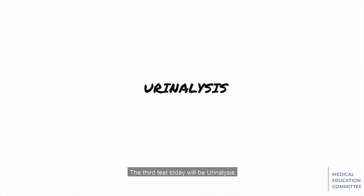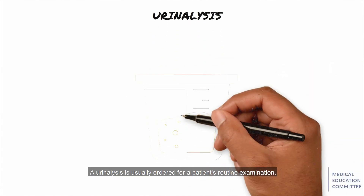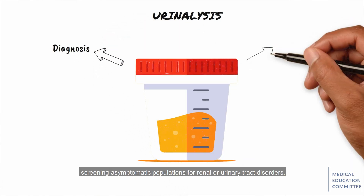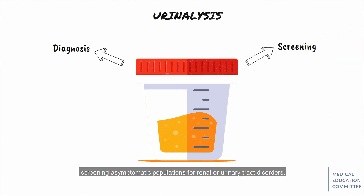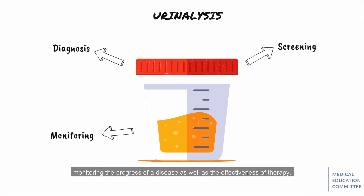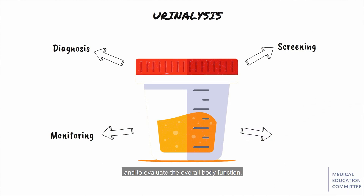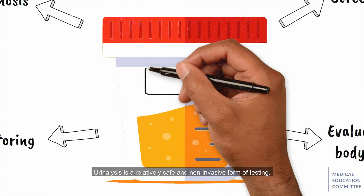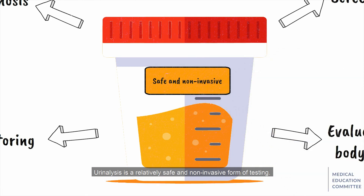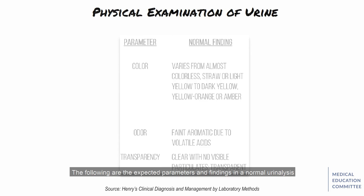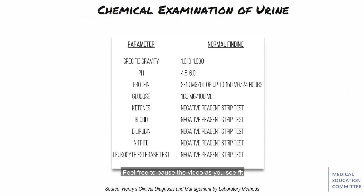The third test today will be urinalysis. A urinalysis is usually ordered for a patient's routine examination. It aids in the diagnosis of diseases, screening asymptomatic populations for renal or urinary tract disorders, monitoring the progress of a disease as well as the effectiveness of therapy, and to evaluate overall body function. Urinalysis is a relatively safe and non-invasive form of testing. The following are the expected parameters and findings in a normal urinalysis — feel free to pause the video as you see fit.